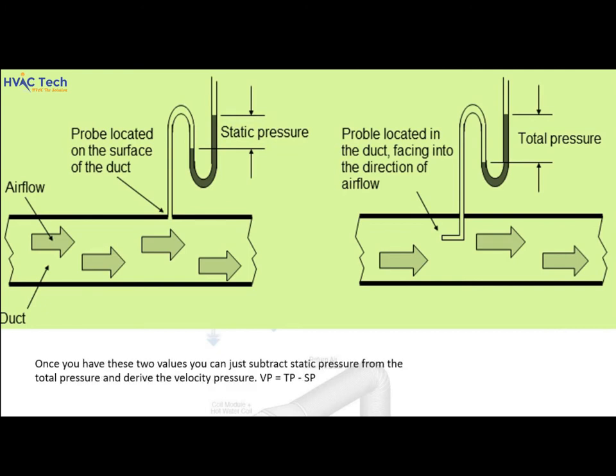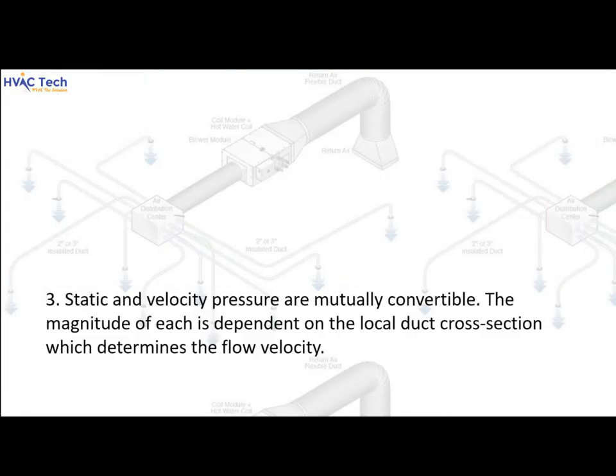Once you have these two values, you can subtract static pressure from the total pressure to derive the velocity pressure: VP equals TP minus SP. Static and velocity pressure are mutually convertible, and the magnitude of each is dependent on the local duct cross section, which determines the flow velocity.